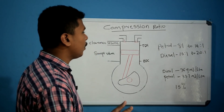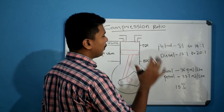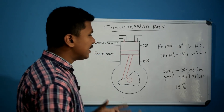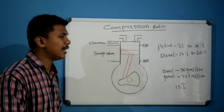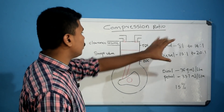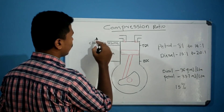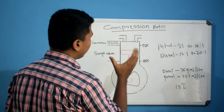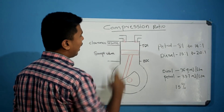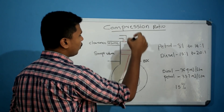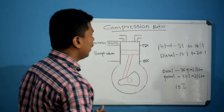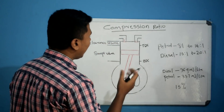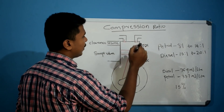The diesel engine has a compression ratio of 15 to 20. This higher compression ratio of the diesel engine is because it is a compression ignition engine. In a petrol engine, an air-fuel mixture is ignited by a spark, whereas in a diesel engine, the air is compressed during the suction stroke and fuel is injected separately.